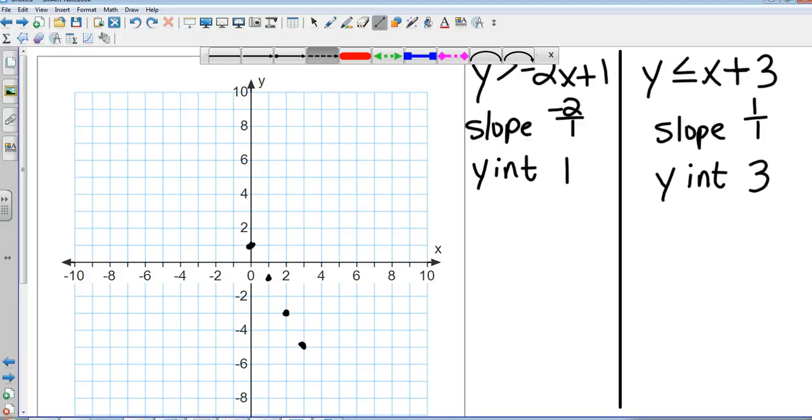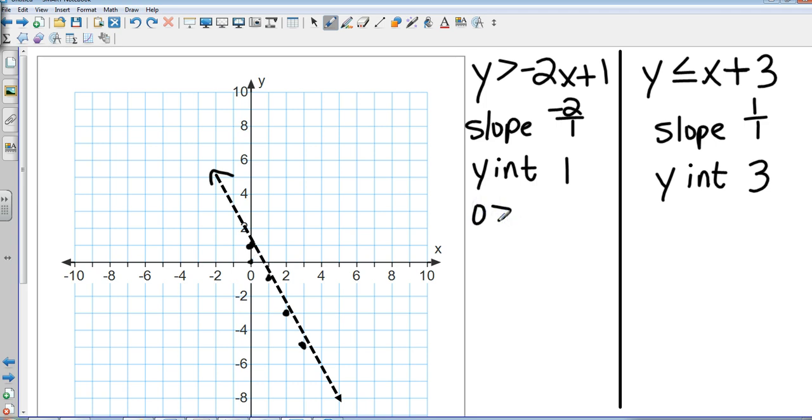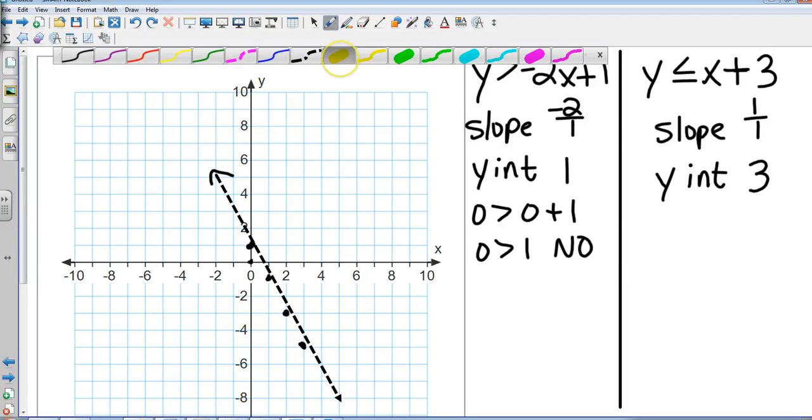I know some of you are thinking I didn't put the dashed line—go ahead and create the dashed line. And now let's do our shading. So we're going to pick zero zero. I substitute it in: is zero greater than zero plus one? So final answer is zero greater than one, and that is an absolute no. So we are going to shade the other direction. I'm going to go with yellow again.